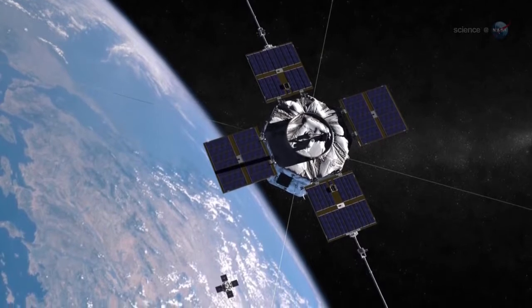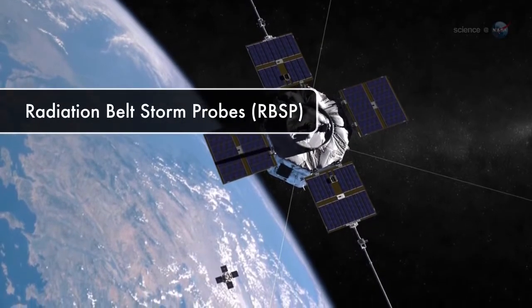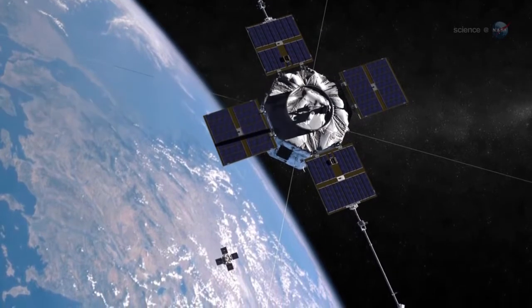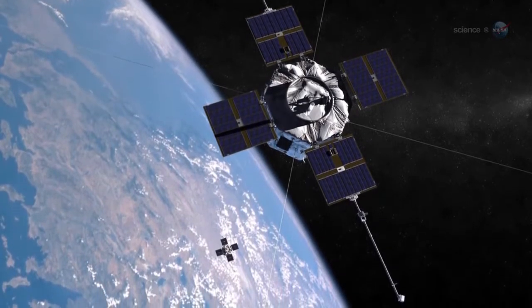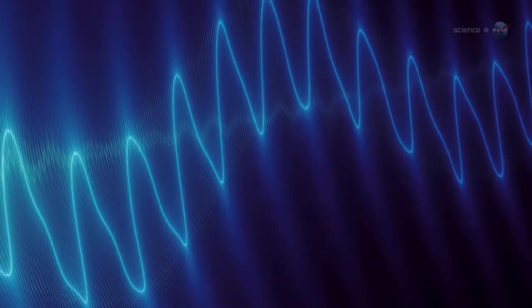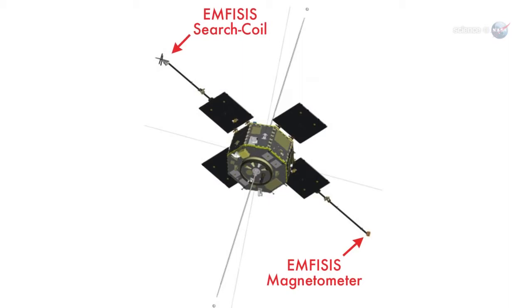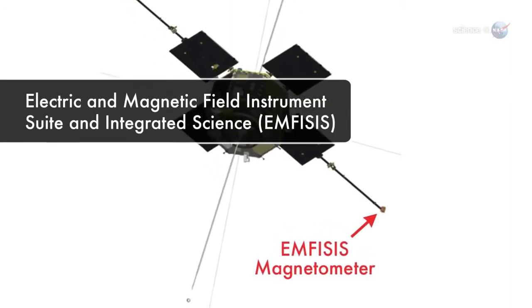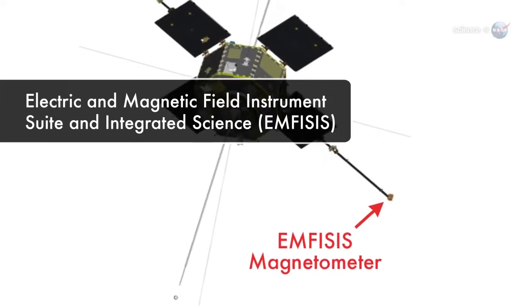Now, NASA's twin radiation belt storm probes are traveling through the region of space where Chorus actually comes from, and the recordings are out of this world. This is what the radiation belts would sound like to a human being if we had radio antennas for ears, says Kletzing, whose team at the University of Iowa built the EMFISIS electric and magnetic field instrument suite and integrated science receiver used to pick up the signals.